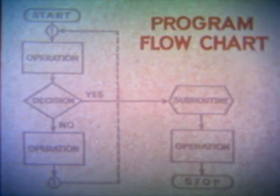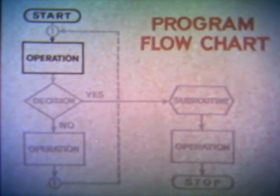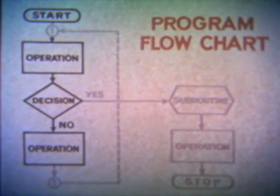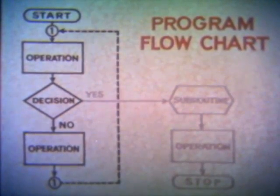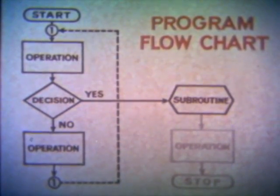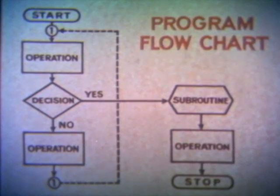This is a very simple example of a program flow chart. After start, an operation is to be performed, such as adding two numbers. On the basis of the result, a decision is to be made, such as determining whether the sum is equal to or greater than some given value. If the answer is no, another operation is to be performed, such as taking another pair of numbers from storage and repeating the initial operation. As long as the decision is no, the repetition continues, using new data each time. When the decision is yes, a subroutine is to be performed, such as extracting the square root. In the next operation, the result is to be printed out. Stop indicates the end of the program process.